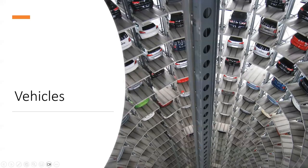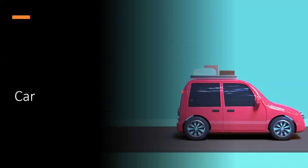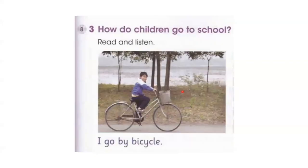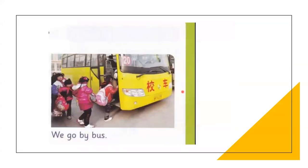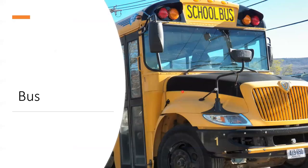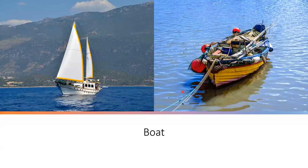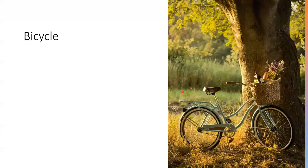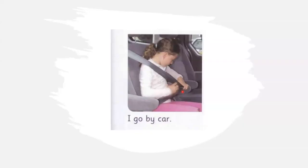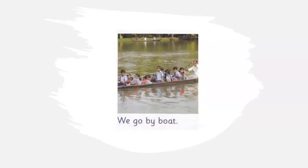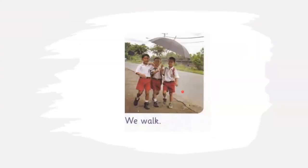Vehicles. Car. I go by bicycle. We go by bus. Bus. This is a bus. Boat. I go by car. We go by boat. We walk.